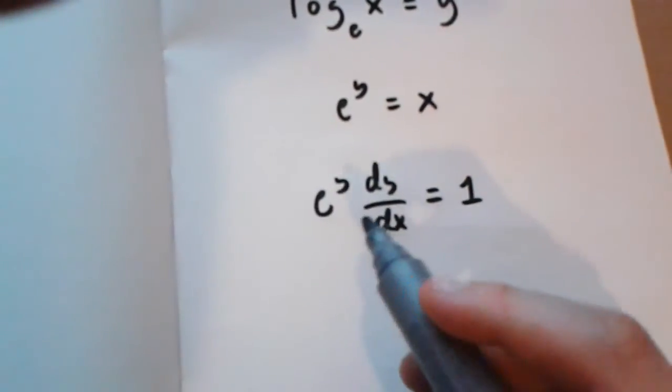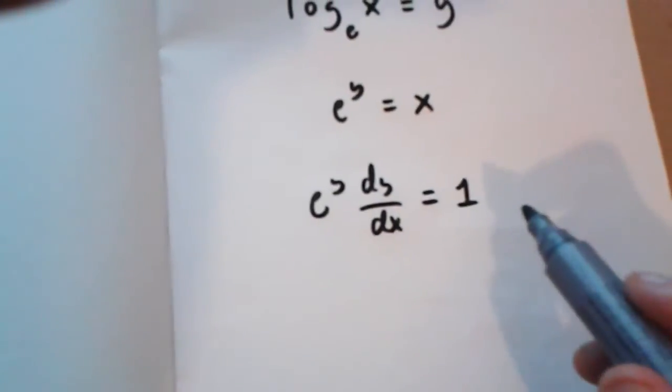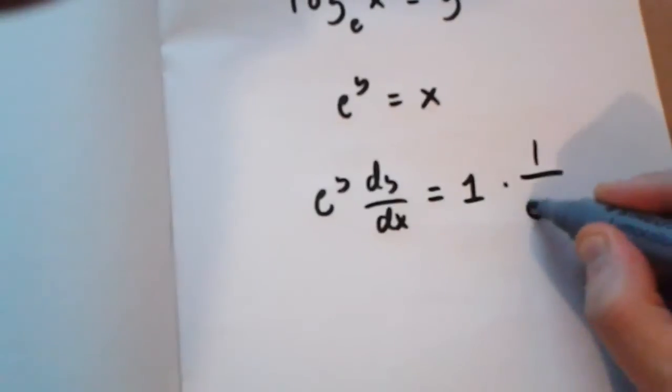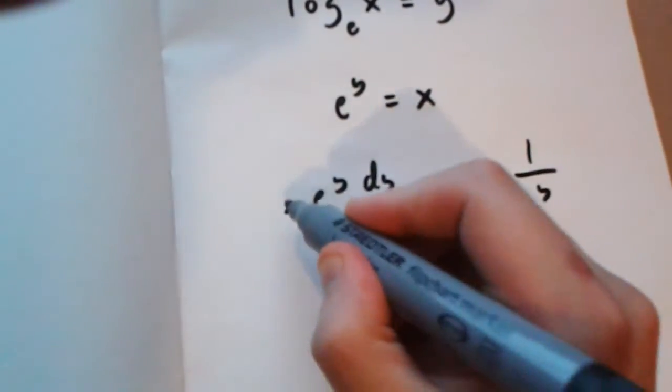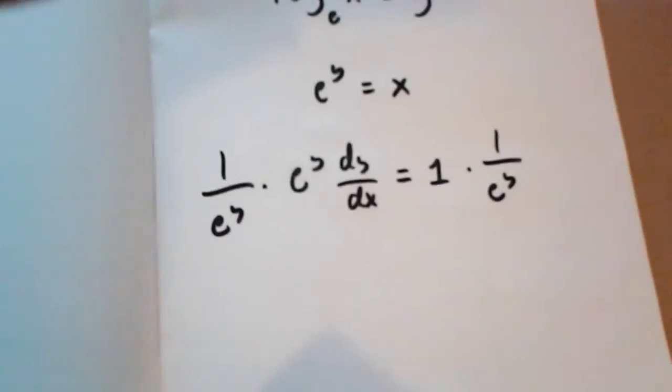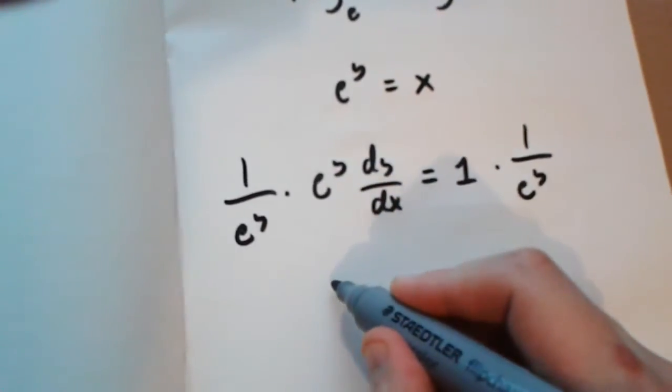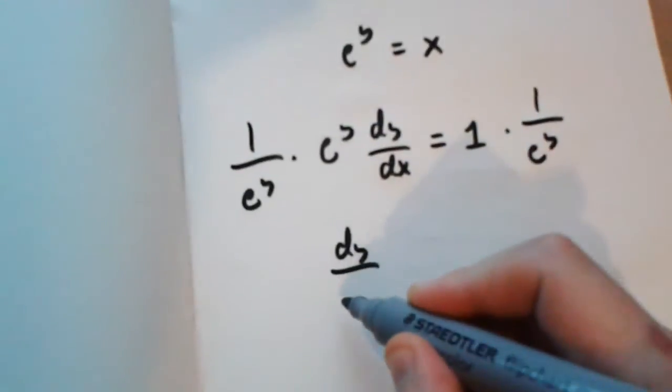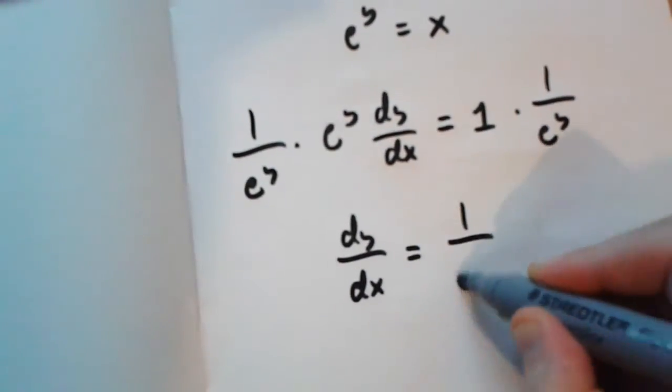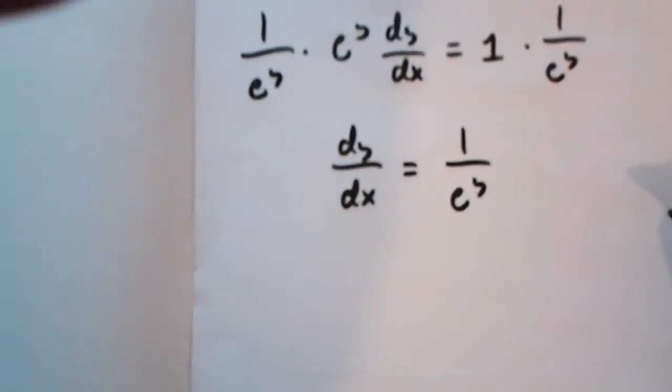We multiply both sides of this equation by 1 over e to the power of y. If we do this, we're going to be left with dy over dx is 1 over e to the power of y.